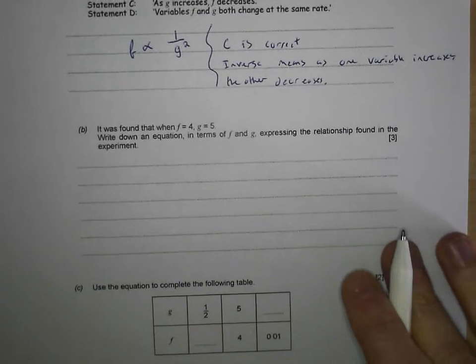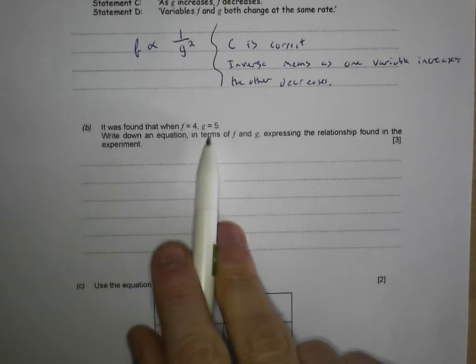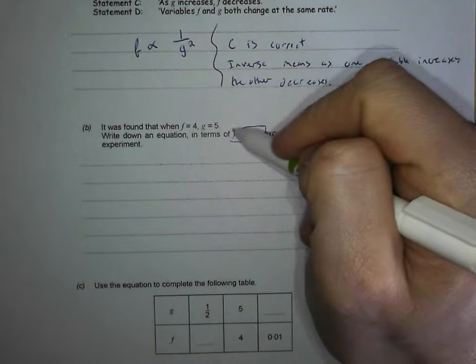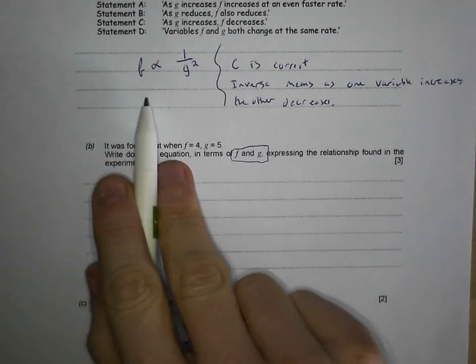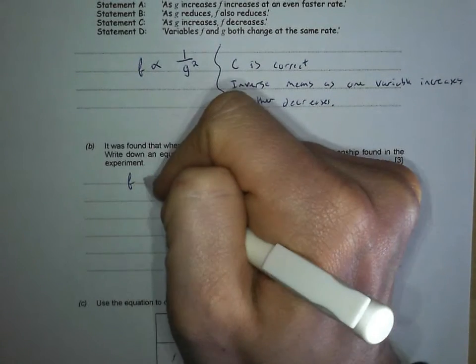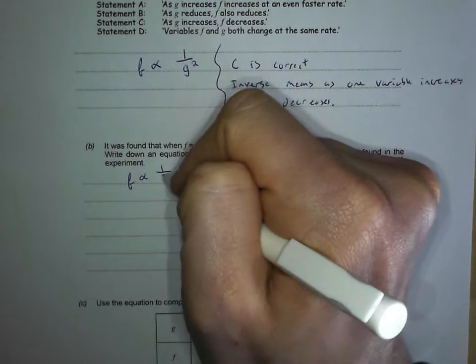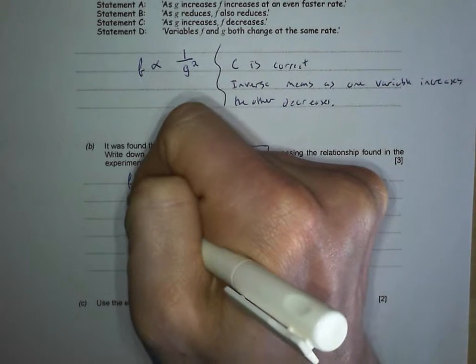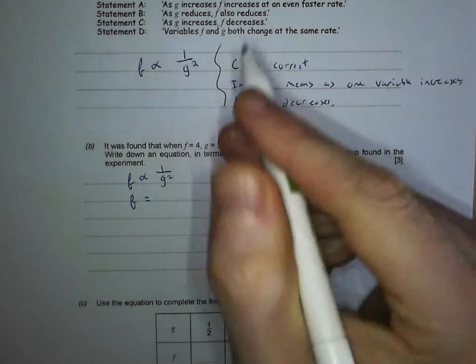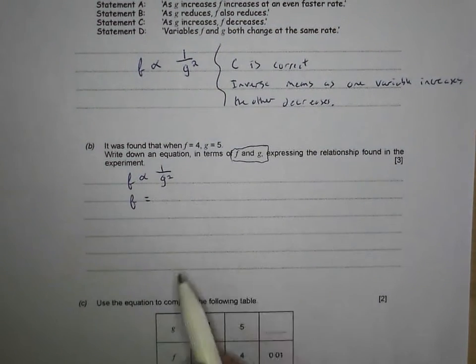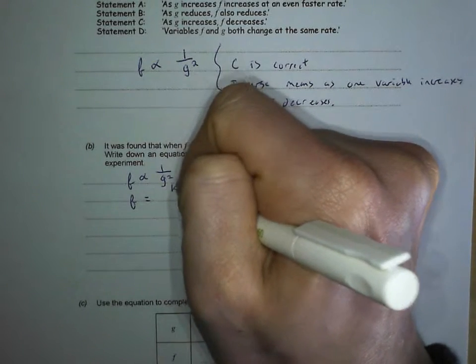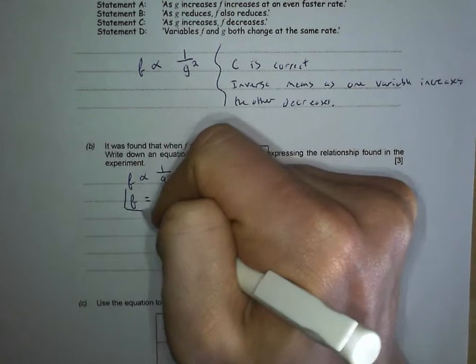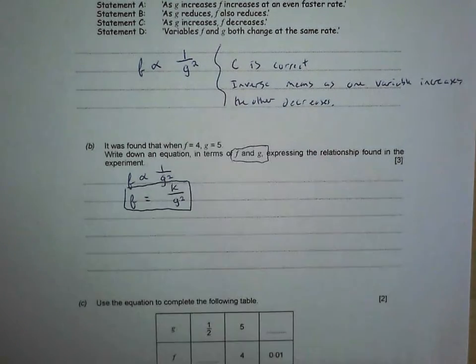And then we get into the actual nuts and bolts. It was found that when f equals 4, g equals 5, write down an equation in terms of f and g expressing the relationship. We've got our start: f proportional inverse 1 over g squared. Write that as an equation with a k. f equals - you're multiplying that function by k, so your k can go on the top - k over g squared. I'm going to put a box around it because that's going to be my formula for later on.